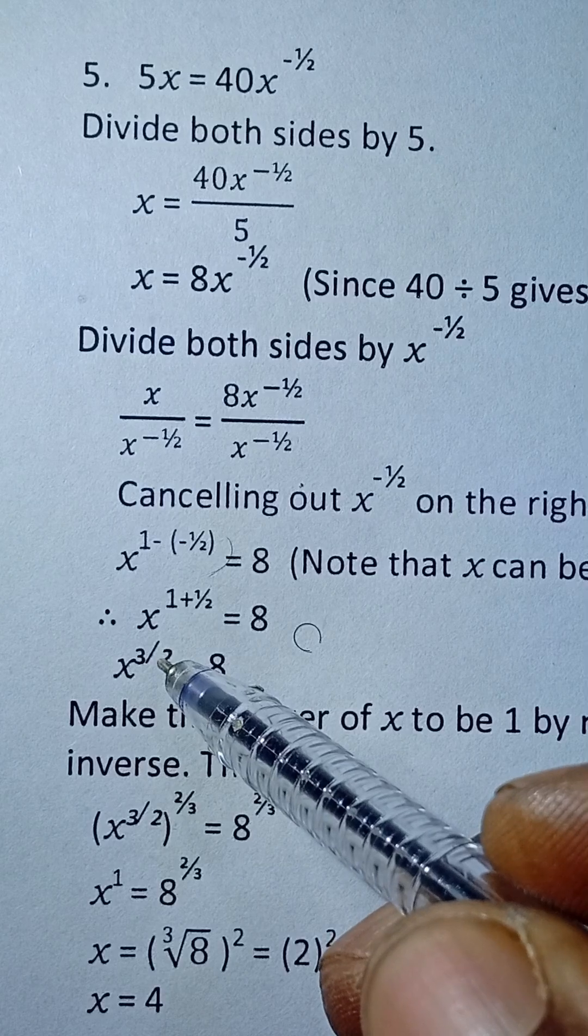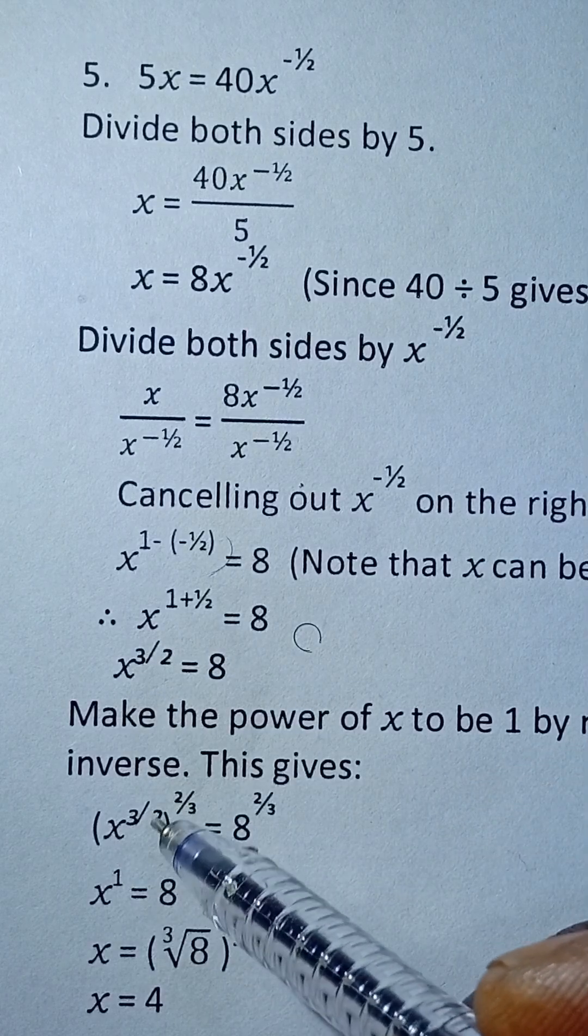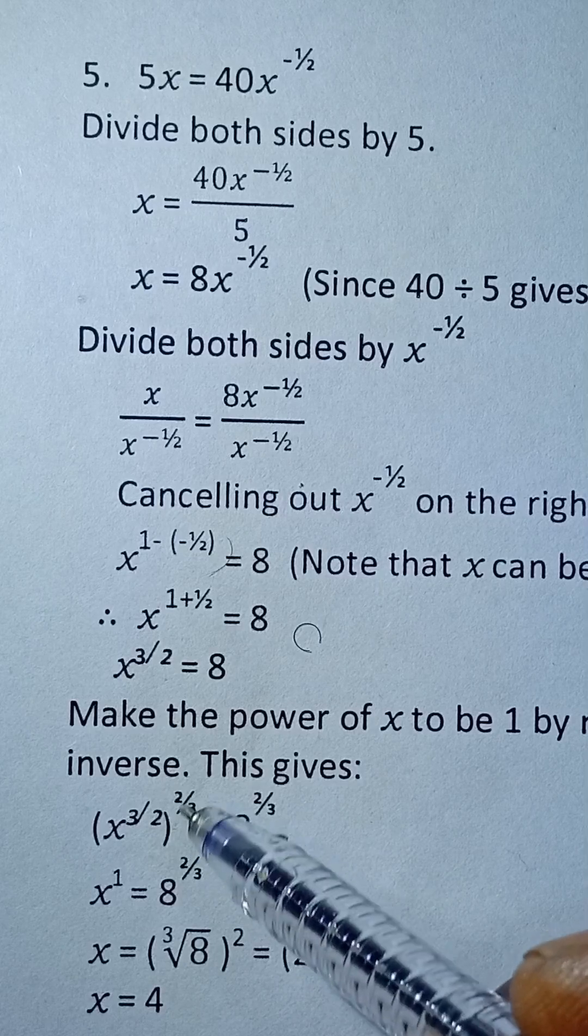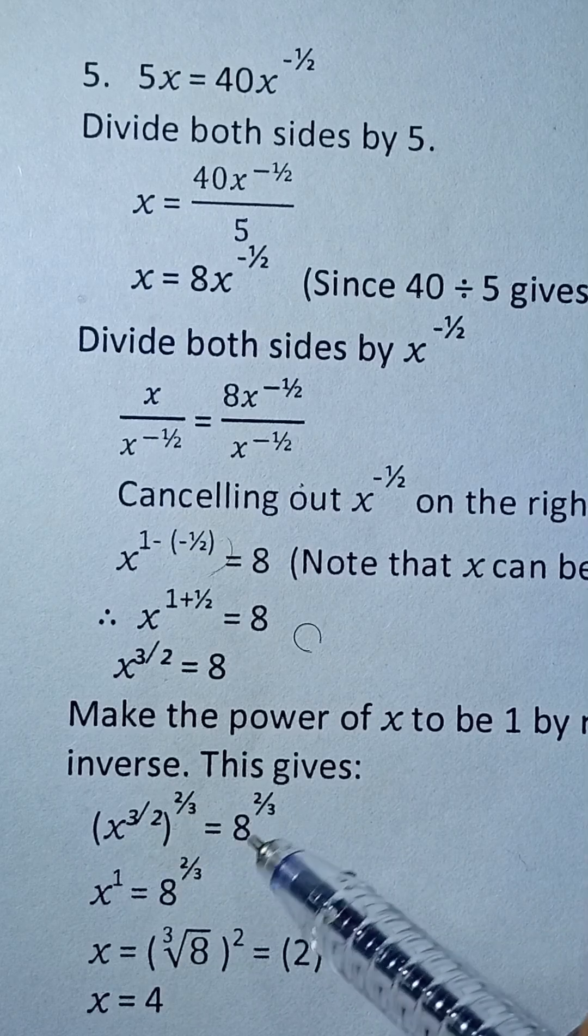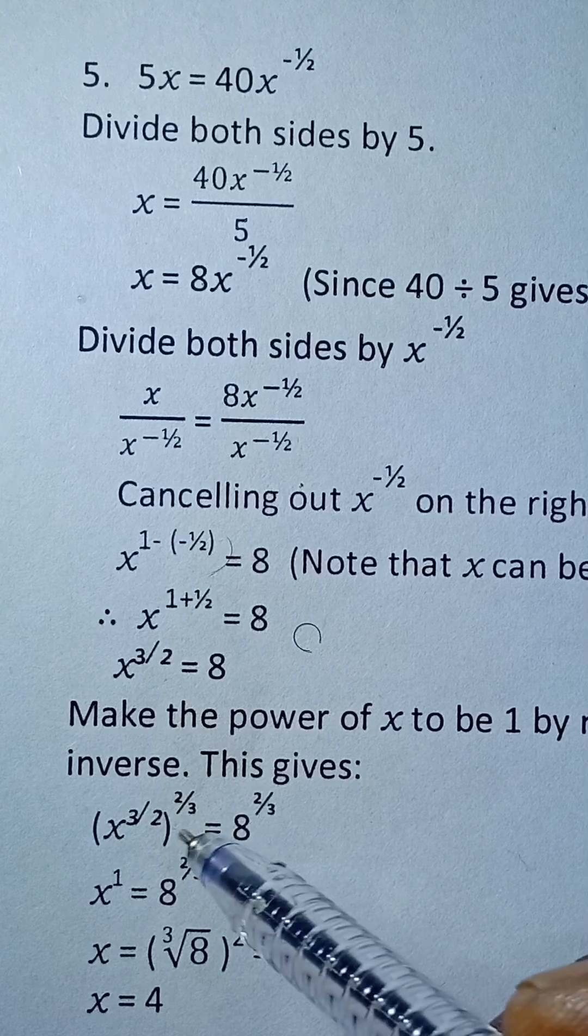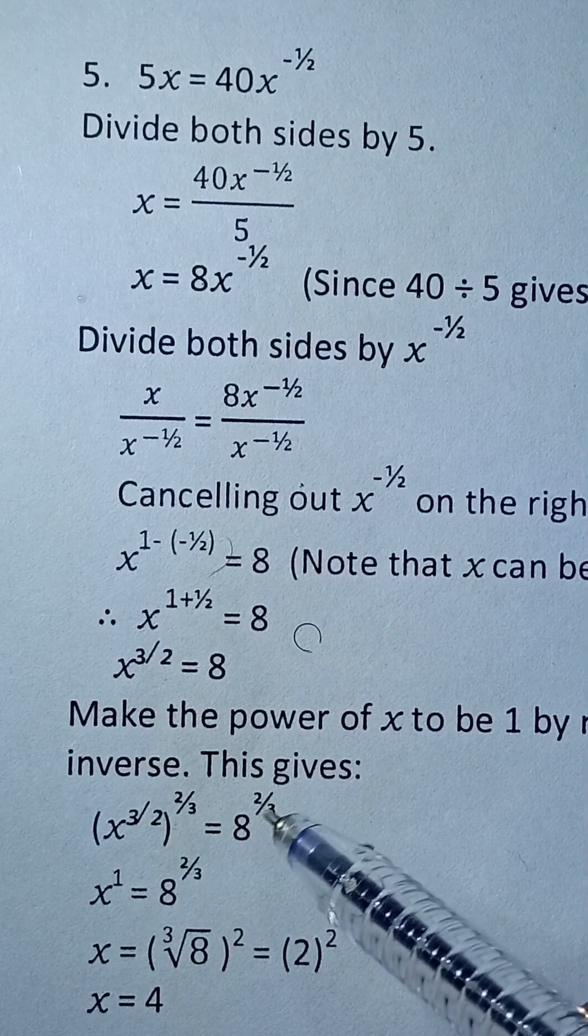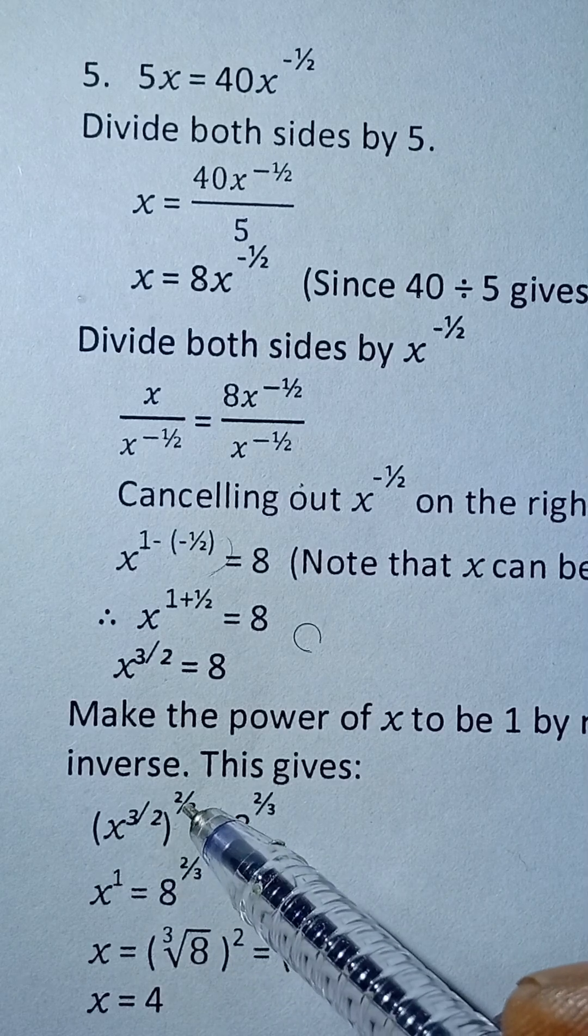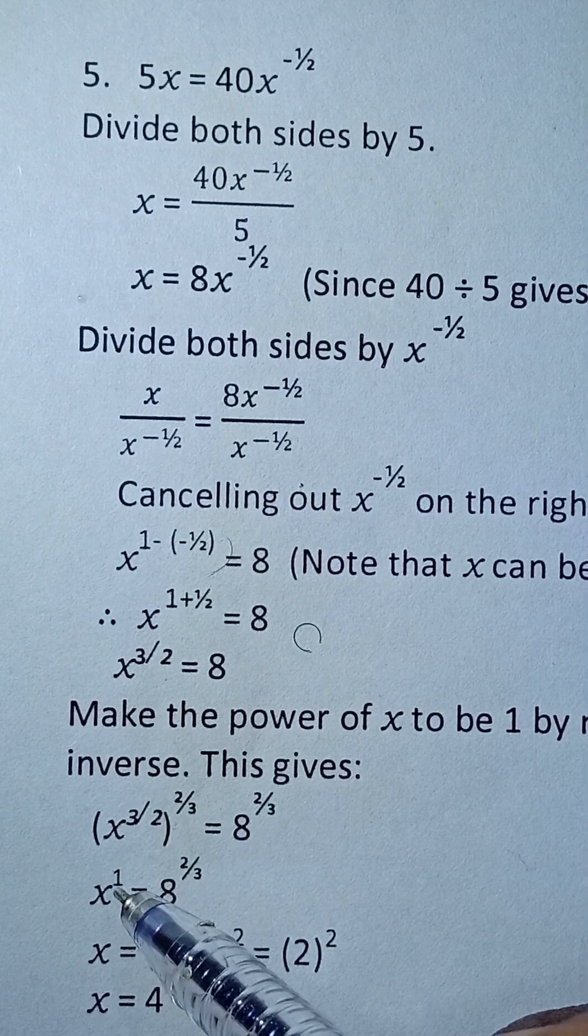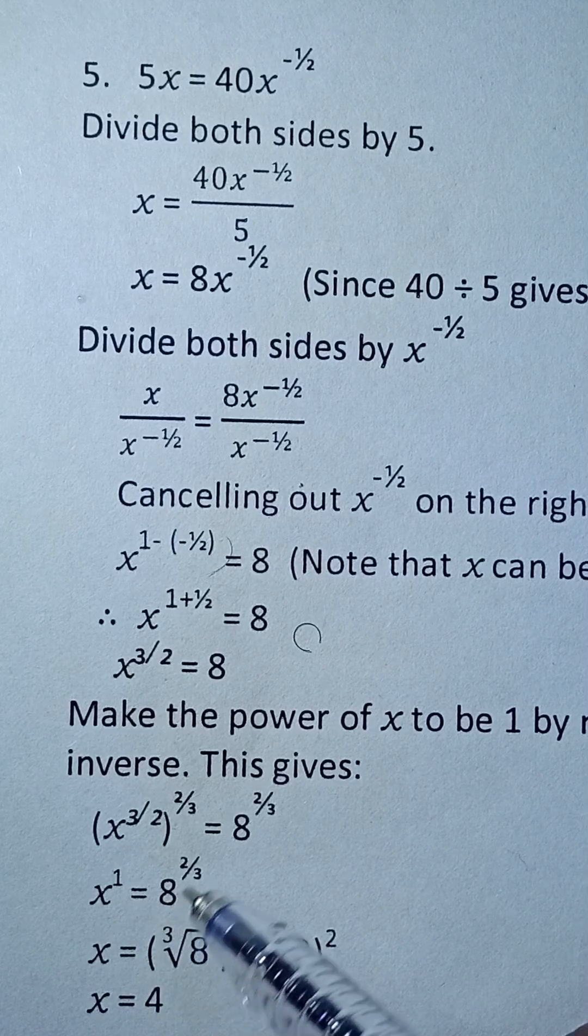The inverse of 3 over 2 is 2 over 3. That means 2 goes up and 3 comes down. So the inverse of 3 over 2 is 2 over 3. So you raise this side to 2 over 3 and you do that to this other side. So whatever you do to this side of equation you also do it to this side. So this becomes x raised power 2 over 3. Now 3 over 2 multiplied by 2 over 3 will give us 1 as the power.